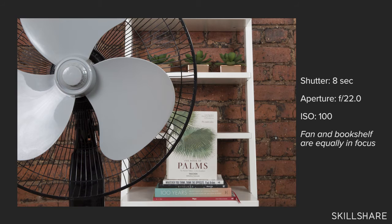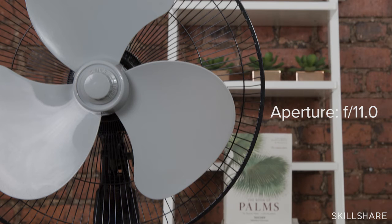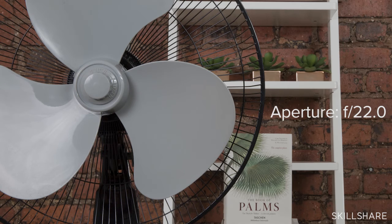That took forever — but here's the thing. The fan blades are still all sharp. But when you look at the books in the background, you're seeing basically a sharp image through and through. At f/2.8 it's fuzzy, at f/11 it's starting to get clear, and at f/22 I know exactly what the title of the book is down to the author and the publisher. This is a realistic view of how you use aperture to control sharpness, depth of field, and make creative decisions about how to capture your subject.